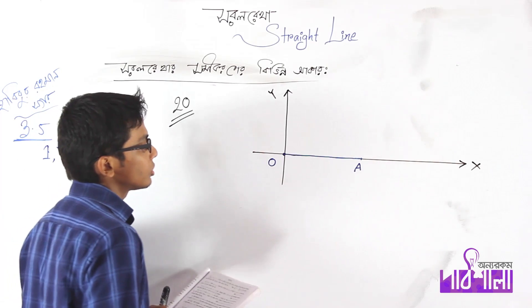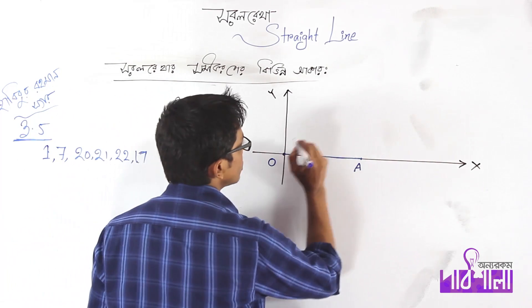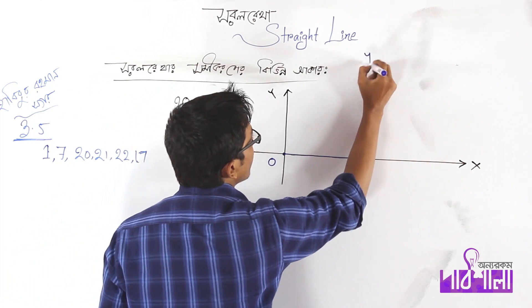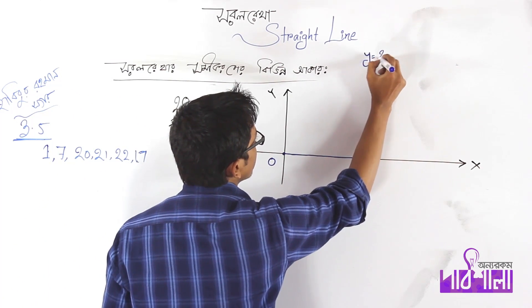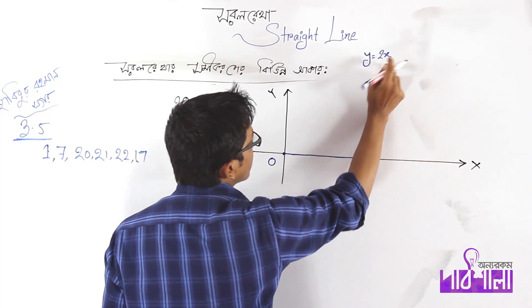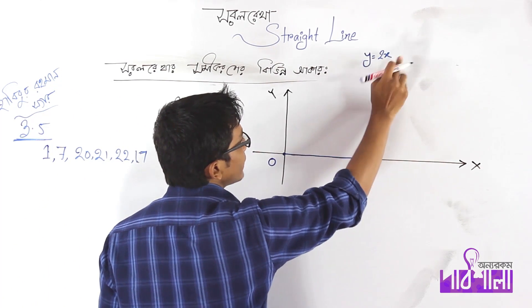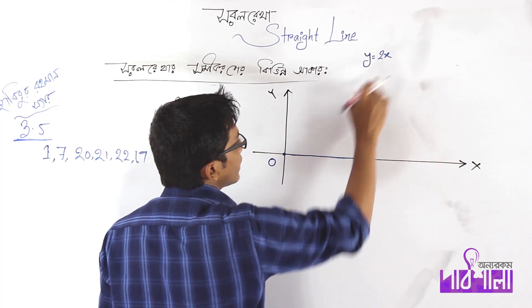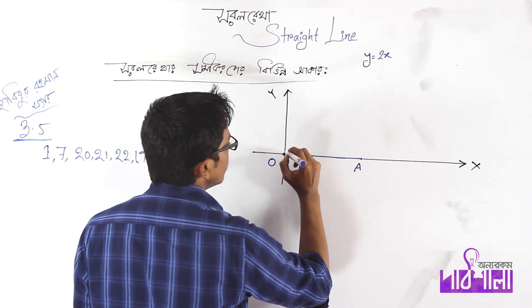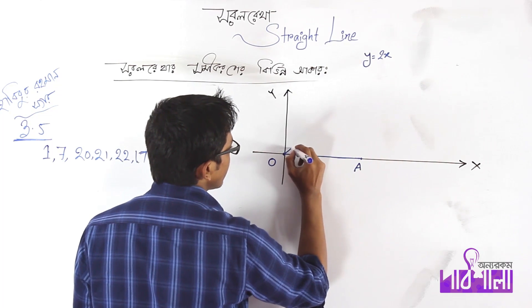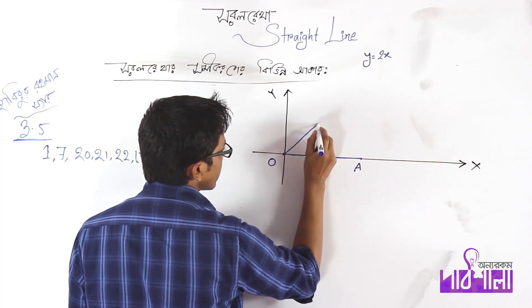Y equals 2. Y equals 2. Y equals M, X. M, X.